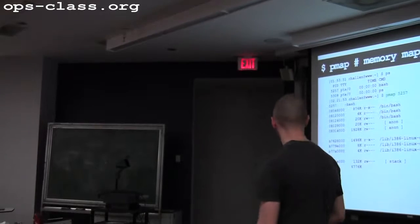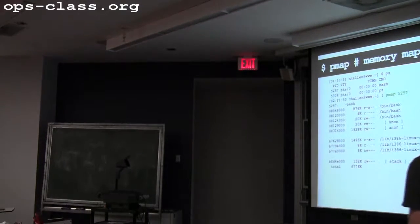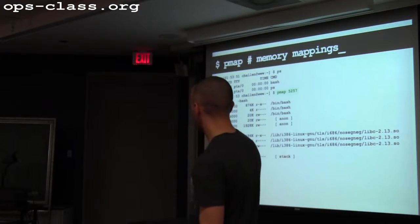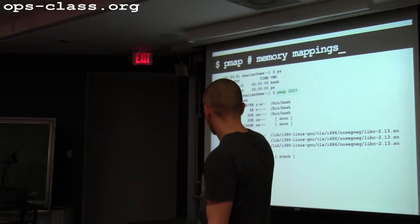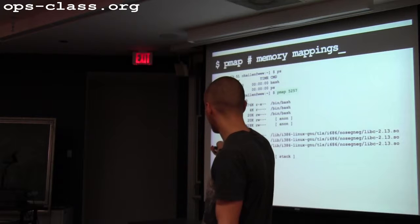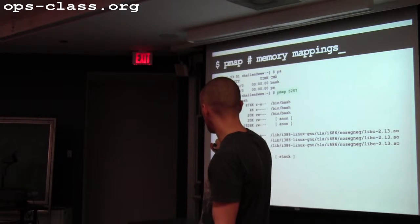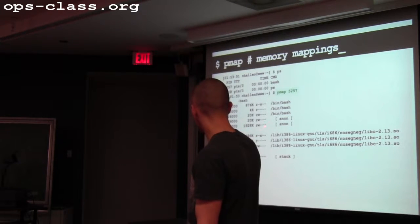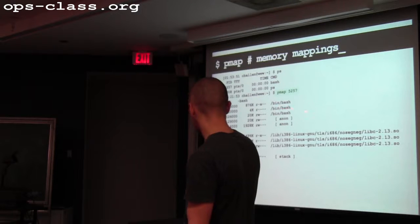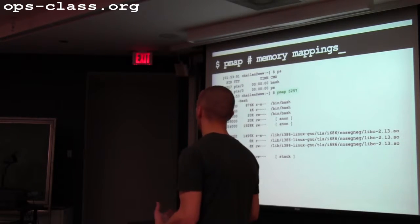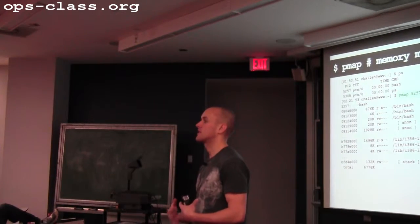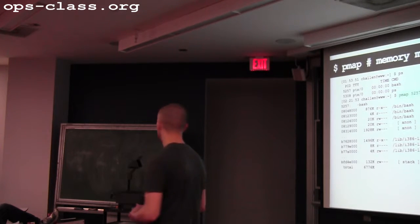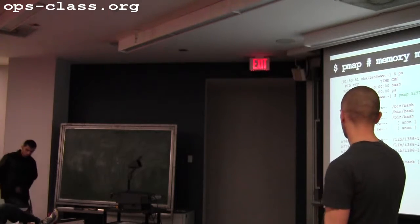This is PMAP output we used a couple weeks ago to look at the address space of a process. These are virtual addresses. You can see Bash's code loaded at a relatively low address. There's a read-execute section for code, read-only sections for static variables, and read-write sections for global variables allocated at runtime. Libraries are loaded much higher, and the stack is way up near the top of the address space.